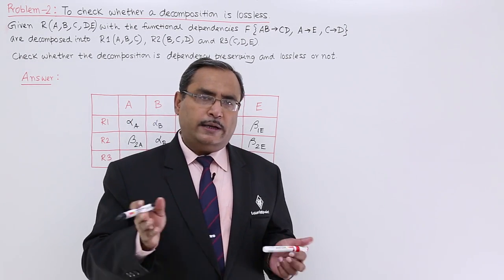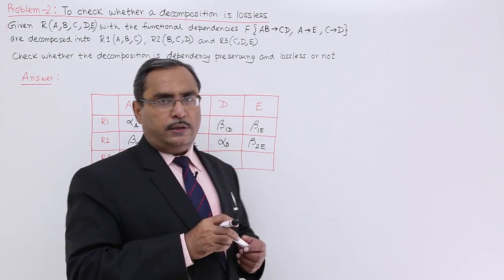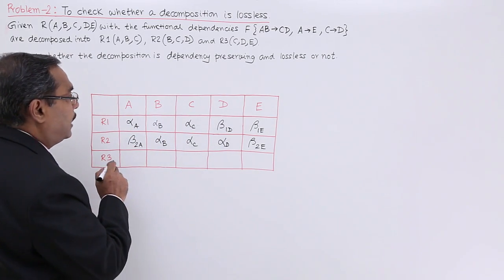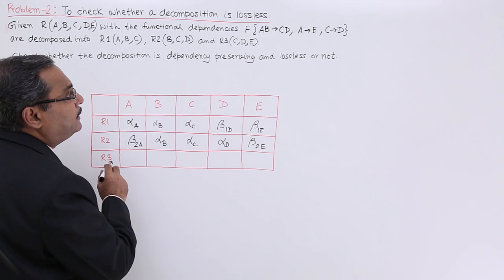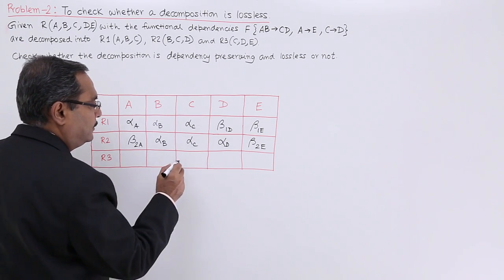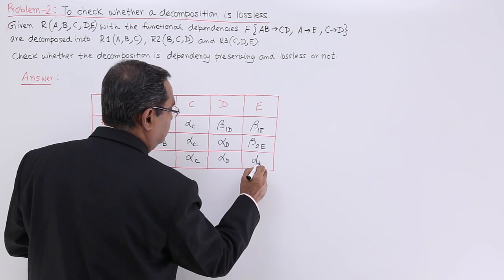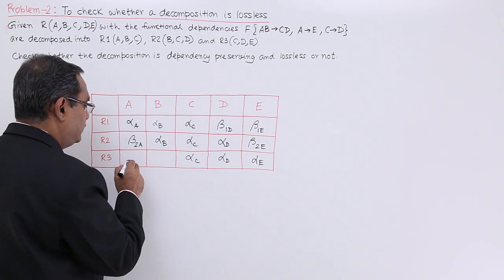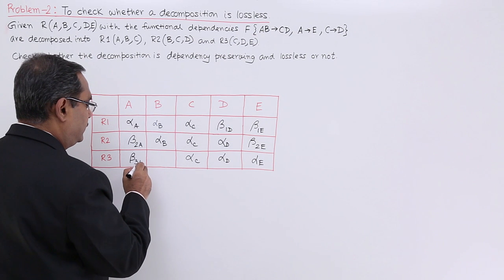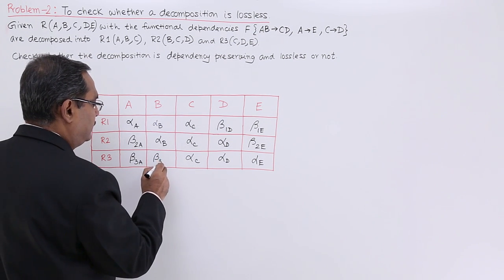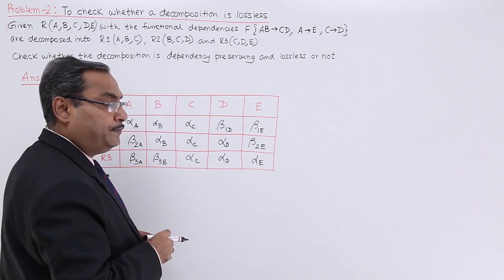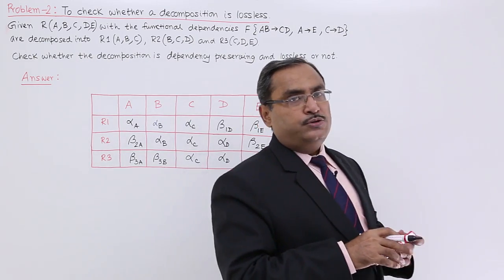In this way we have filled up. Now, let us fill up the last one, last row. Here it is for R3. R3 is having C, D and E. And here they will be filled up with beta. Beta 3A and beta 3B. Up to this it is okay for us.